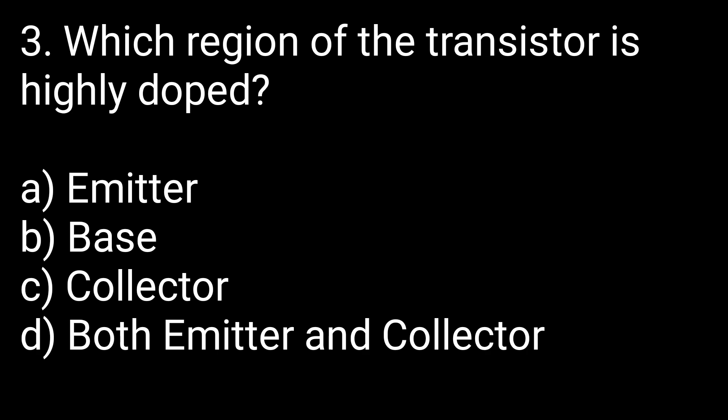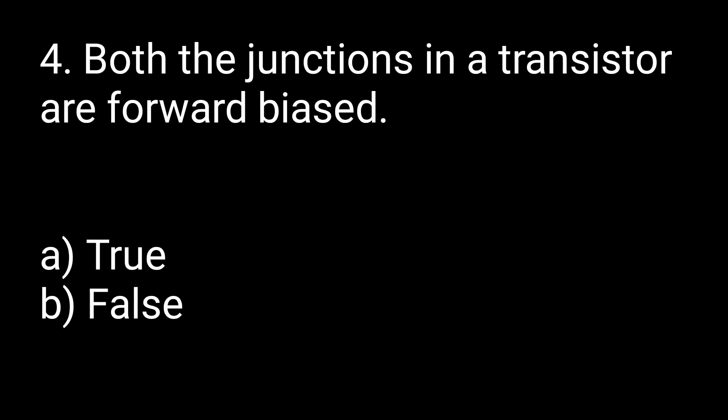Third question: which region of the transistor is highly doped? Moving to the fourth question: are both junctions in the transistor forward biased?